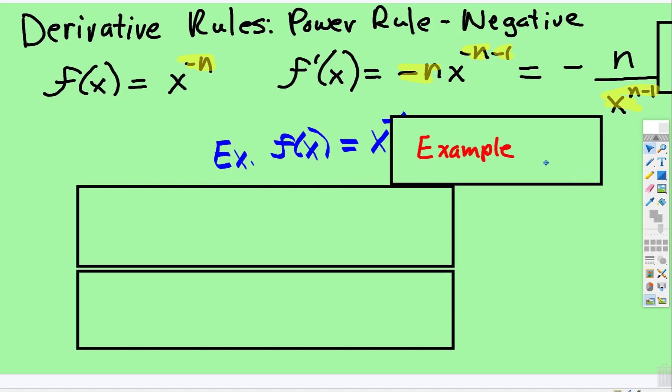So let's do an example. If you have f of x equals x to the negative fourth, you're going to find the derivative.